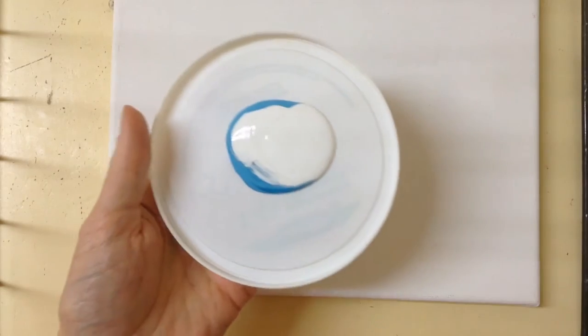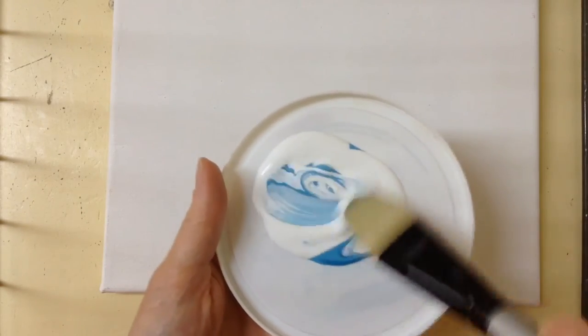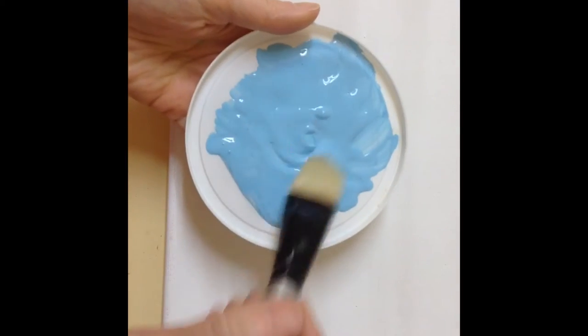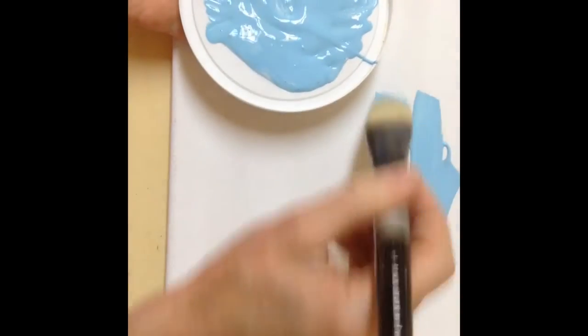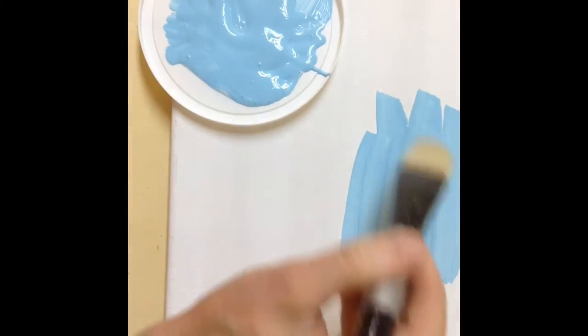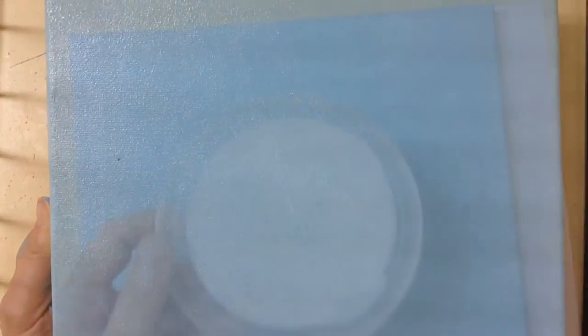And you want to mix enough that you have enough to cover the whole canvas, otherwise you'll have to remix it. So once you're happy with your color, you're going to start painting your canvas and you're going to paint the whole background one flat color. It's actually easier to get an even coat if you use a mini roller and you roll your paint all across and then it becomes much more even and then you're going to let it dry.